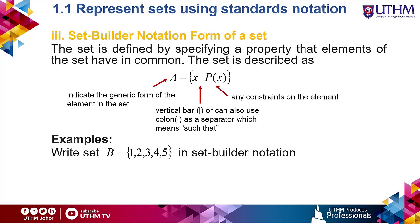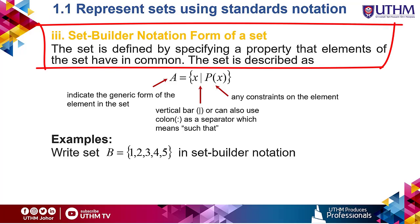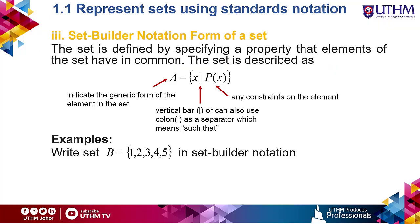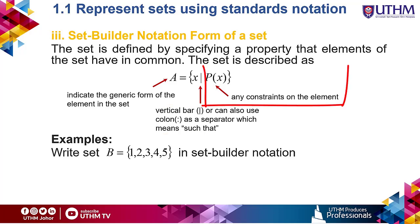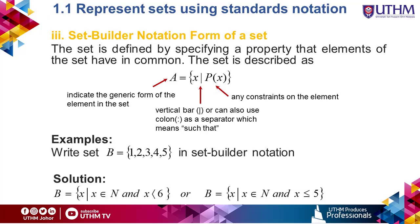Let's see the last type of representing a set — set builder notation form. This type of set is defined by specifying a property that elements of the set have in common. A indicates the generic form of the element in the set. The vertical bar or colon is used as a separator meaning 'such that', and the rightmost part represents any constraints on the element. You are supposed to write set B in set builder notation form. You can write your answer in either of two ways shown — both are correct.